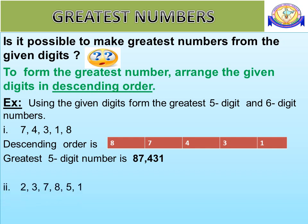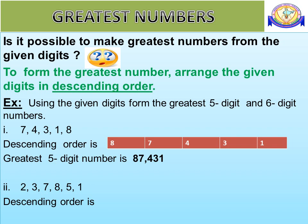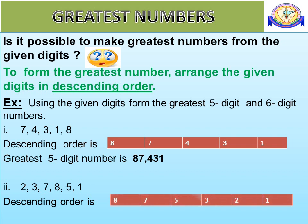Similarly, consider the digits 2, 3, 7, 8, 5, 1. Descending order is 8, 7, 5, 3, 2, 1. Therefore, the greatest 6-digit number is 8,75,321.